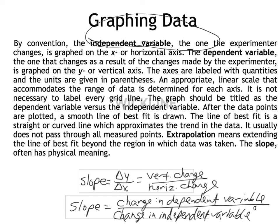In other words, dependent versus independent. After the data points are plotted, always include a smooth line of best fit. In previous classes you may have connected the dots, but in physics we make a smooth line — curved or linear — that goes through as many plot points as possible. That may mean leaving out some plot points if the overwhelming data supports a clear relationship.